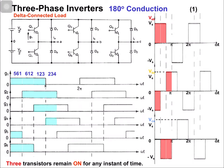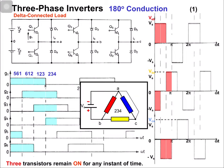The next switching state is 2, 3, 4. Because of switch 2, phase C is connected with the negative terminal. Because of switch 3, phase B is connected with the positive terminal. Because of switch 4, phase A is connected with the negative terminal. Phase A is negative, phase B is positive, and phase C is negative. The equivalent voltages: vab = -Vs.